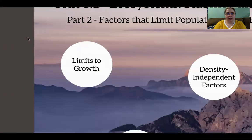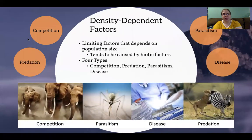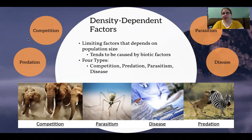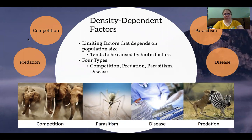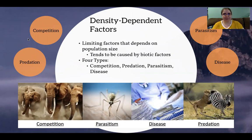Density-dependent factors are limiting factors that depend on the size of the population. As population size gets bigger, these limiting factors have a greater effect. Most of these tend to be biotic factors — caused by other living things within the ecosystem. There are four types: competition, predation, parasitism, and disease.